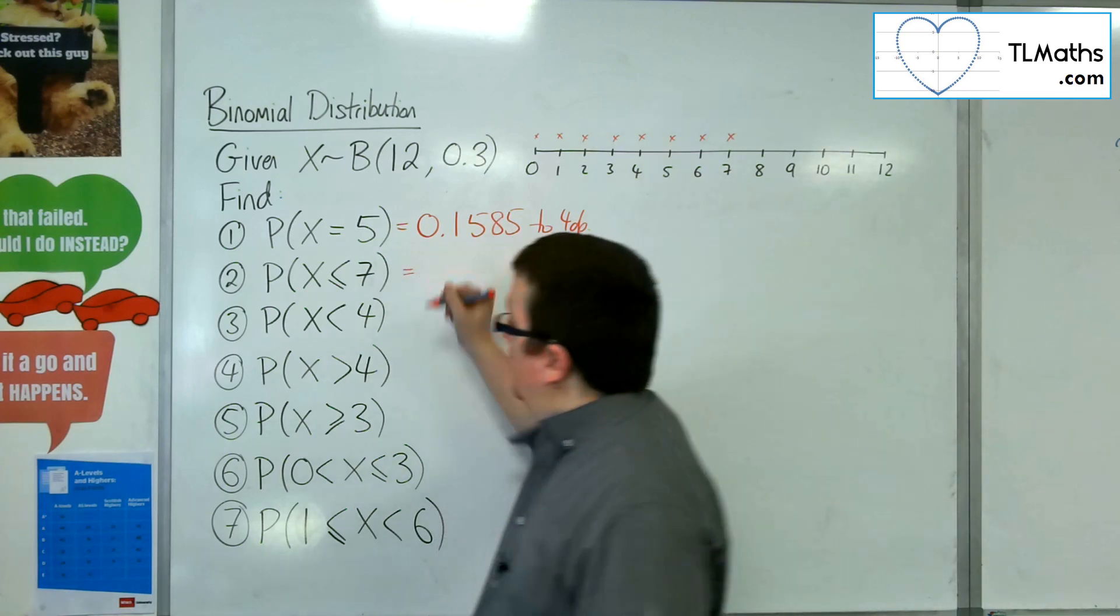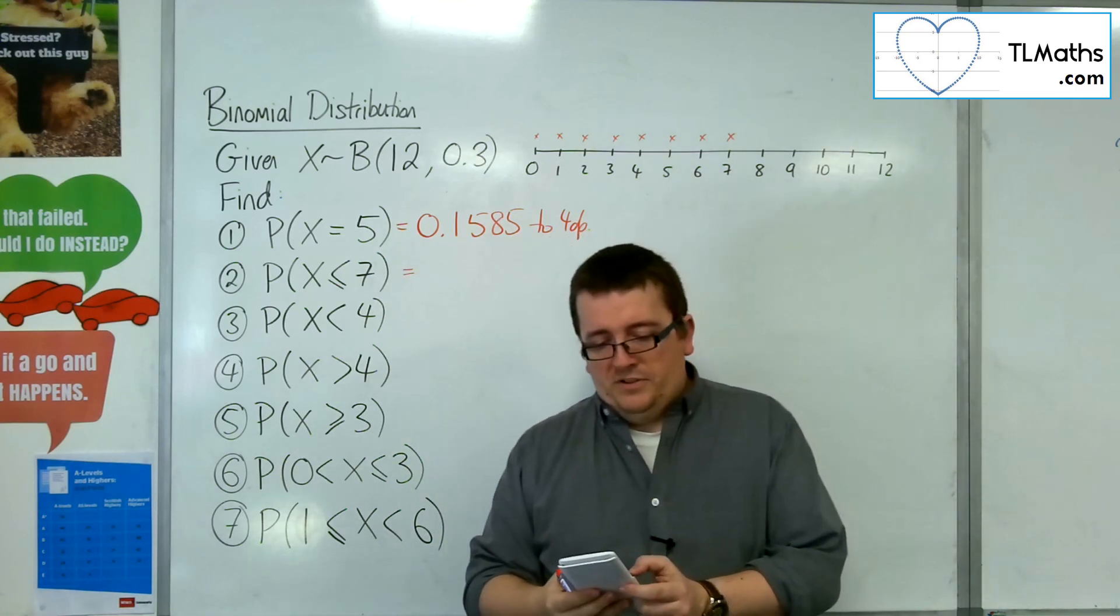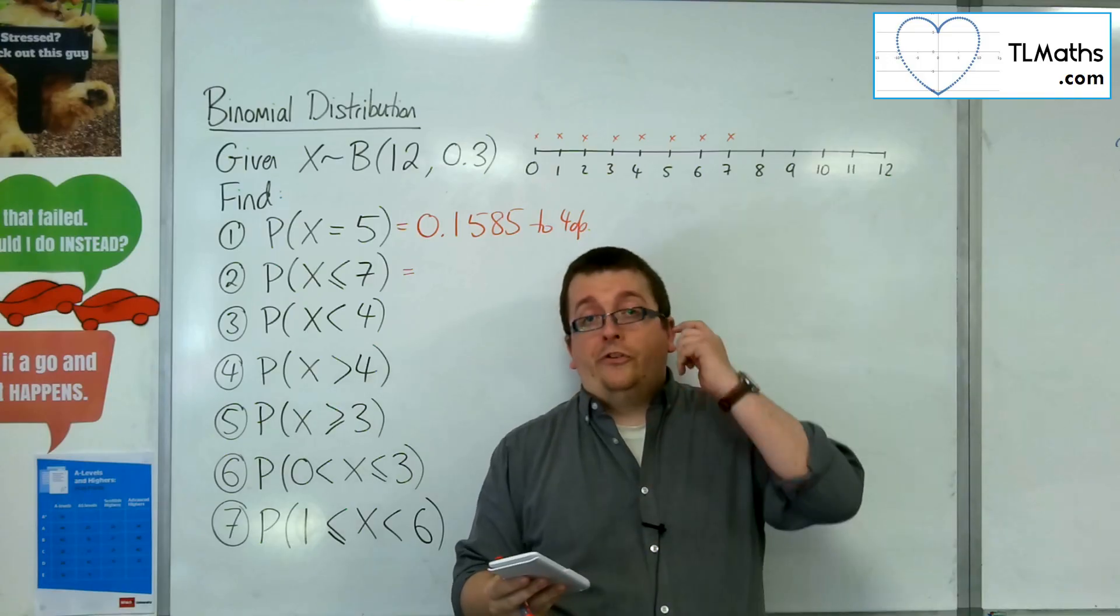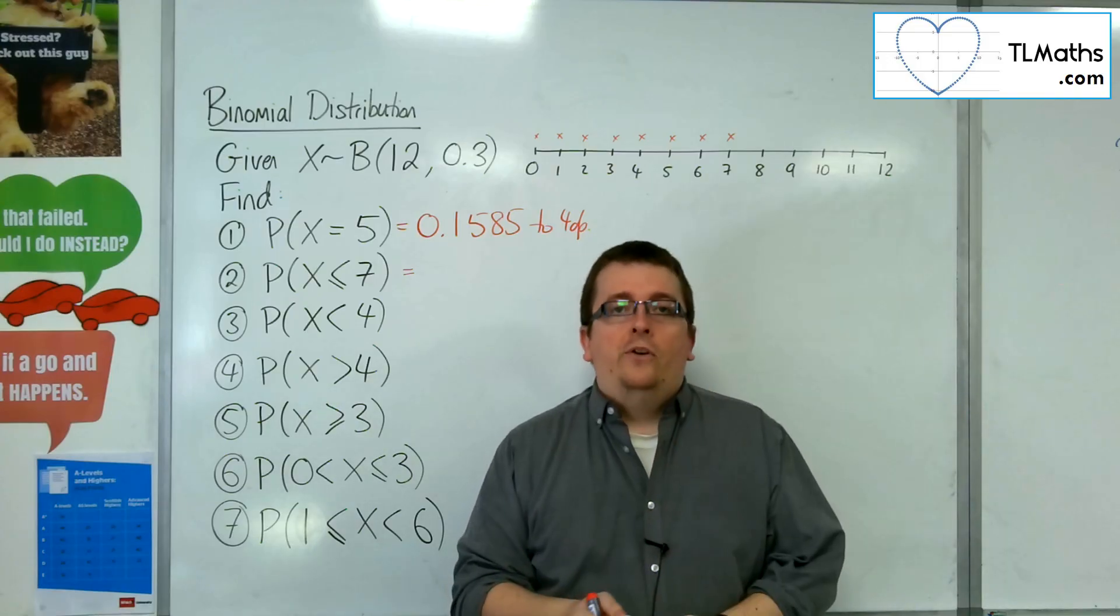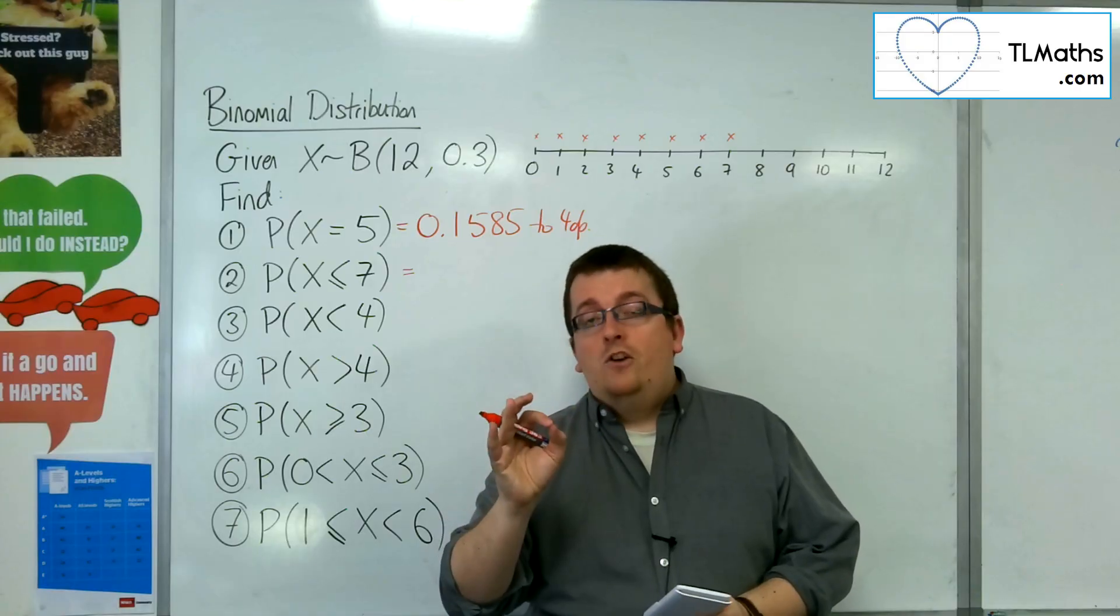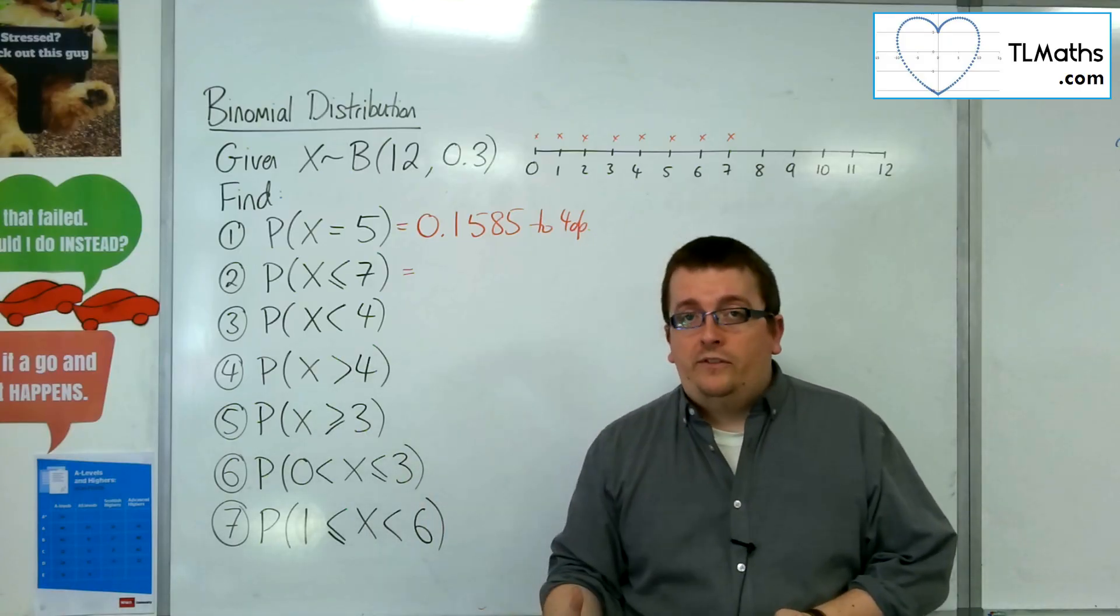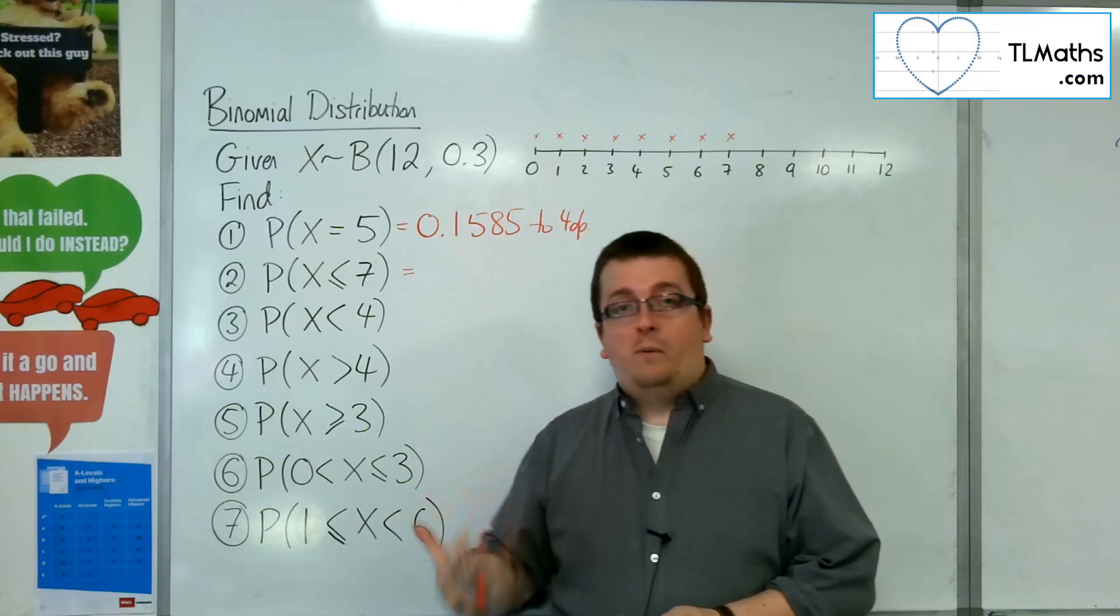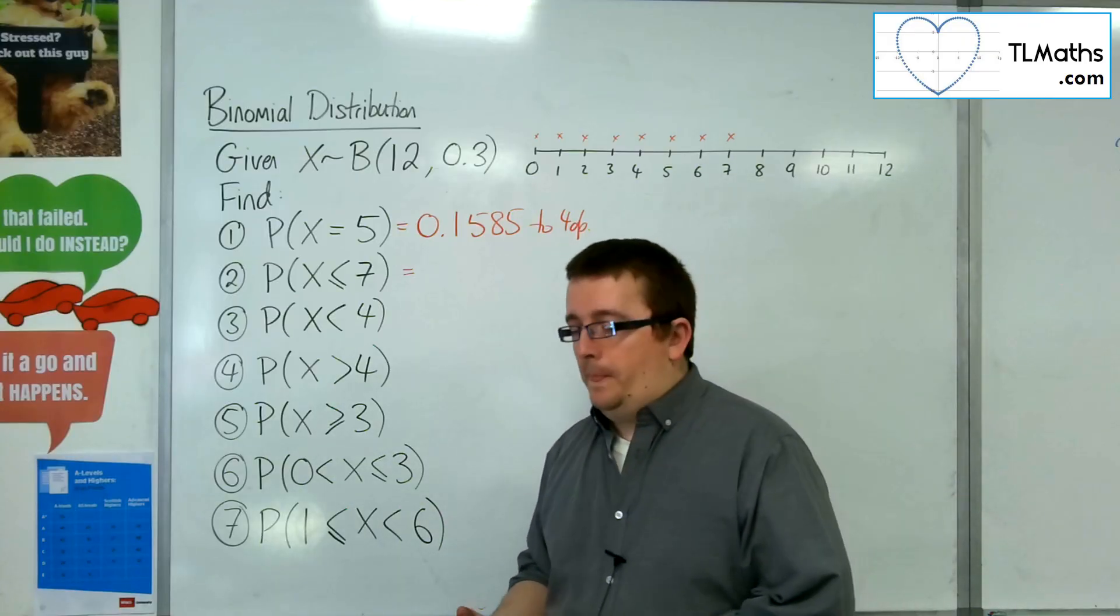So on your calculator, if you go back into menu number 7 and then you want to scroll down to binomial CD. Now, CD, the C represents cumulative. So the cumulative probabilities will add up for you all those probabilities in one go, so you don't have to find them all individually.